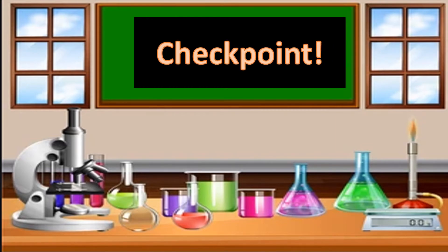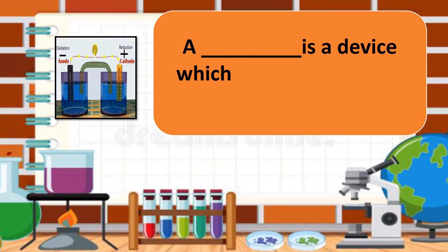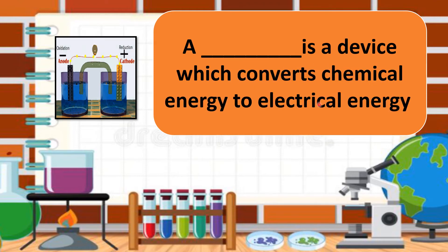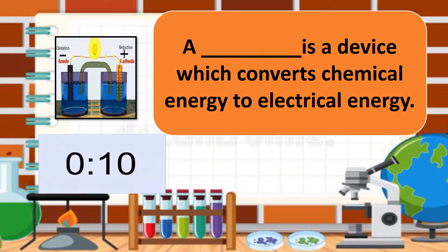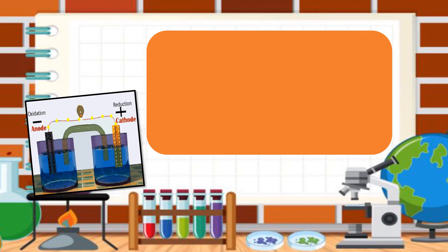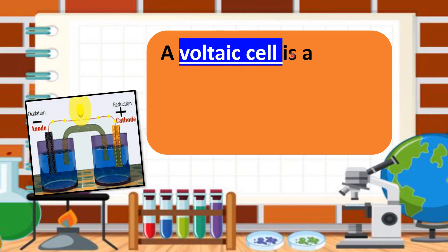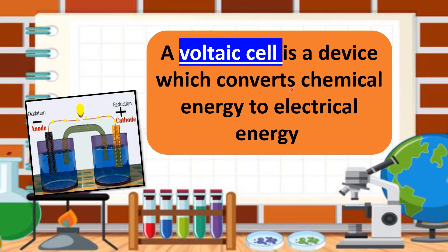Let's have a checkpoint to know if you understand our lesson. A blank is a device which converts chemical energy to electrical energy — what is the answer? From chemical to electrical, it produces electrical energy and the light bulb produces light. So what do you call this device? That is what we call a voltaic cell. Again, a voltaic cell converts chemical energy to electrical energy.